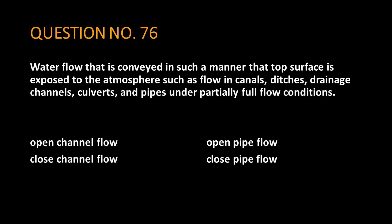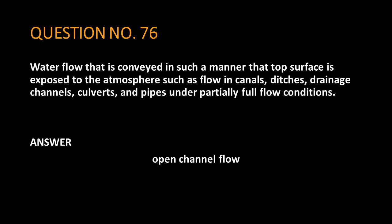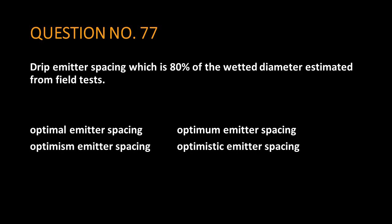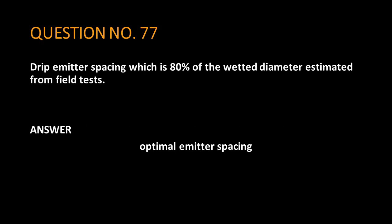Question number 76: water flow that is conveyed in such a manner that the top surface is exposed to the atmosphere, such as flow in canals, ditches, drainage channels, culverts, and pipes under partially full flow conditions. The answer is: open channel flow. Question number 77: drip emitter spacing which is 80% of the wetted diameter estimated from field tests. The answer is: optimal emitter spacing.